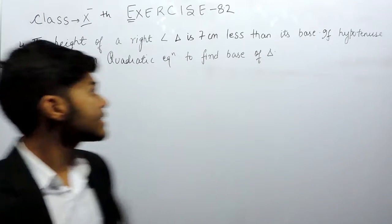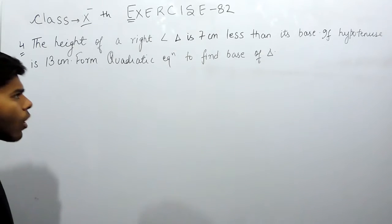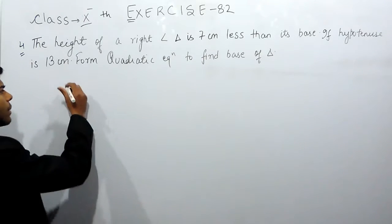Hello everyone, this is the fourth question of exercise 8.2. The question says that the height of a right angle triangle is 7 cm less than its base, and we are given the hypotenuse to be 13 cm. We have to form a quadratic equation and find the base of the triangle.